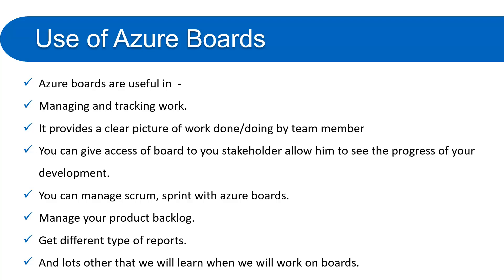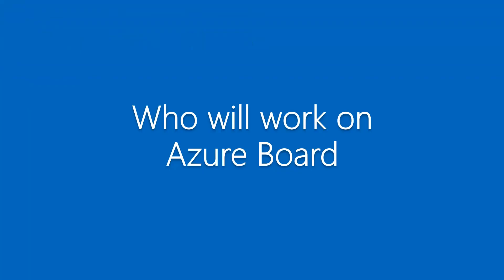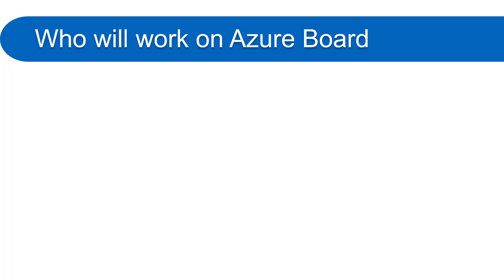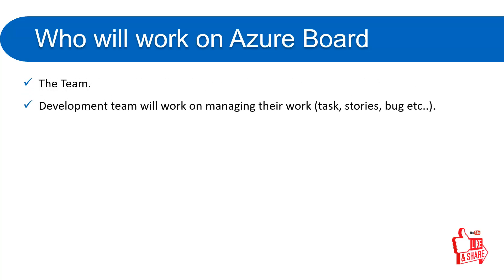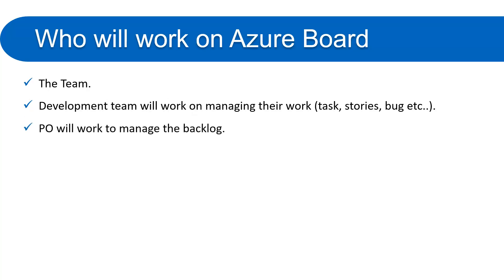An important question: who will work on Azure Board? The entire team has to work on it. The development team will manage their work — ultimately the tasks will be done by the development team, and they are responsible for managing and tracking all work items on the Kanban board. For example, if a task is in the To-Do state and a developer is working on that story, they are responsible for moving it from To-Do to In Progress. The PO is responsible for managing the backlog.